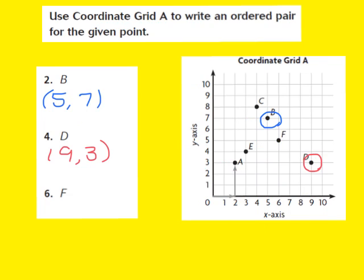My next step is to locate point F. I find point F on my coordinate grid and circle it. Once again, starting from the origin, 0, 0, I move across the x-axis first — remember, x comes before y. Moving across: 1, 2, 3, 4, 5, 6. I stop at 6 because F is located at 6 on the x-axis. So I write down 6 as my x-coordinate.